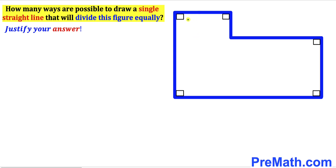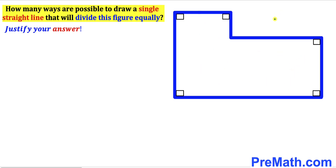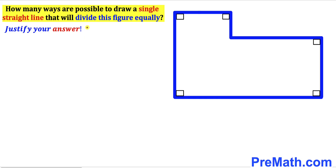Welcome to Pre-Math. In this video we have a multi-sided blue shape where all angles are 90 degrees each. Our task is: how many ways are possible to draw a single straight line that will divide this given figure equally? Don't forget to justify your answer.